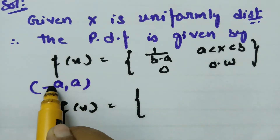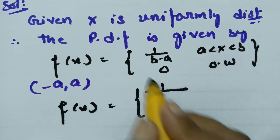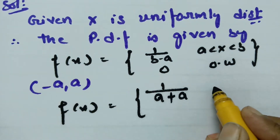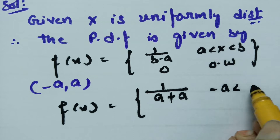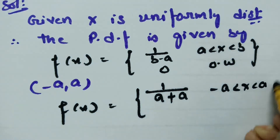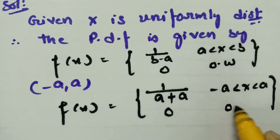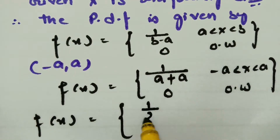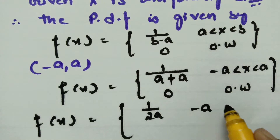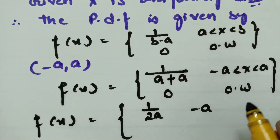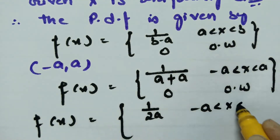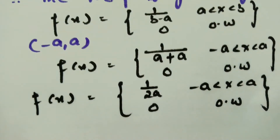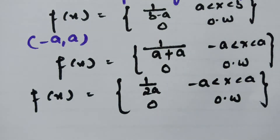Substituting b = a and the lower bound as -a into the formula, we get f(x) = 1/(a - (-a)) = 1/(2a), where -a < x < +a, and 0 otherwise.